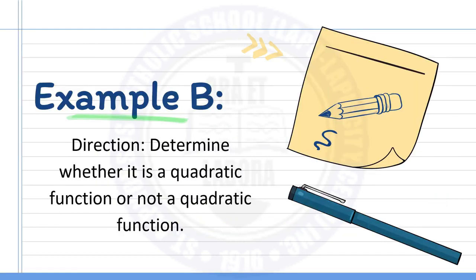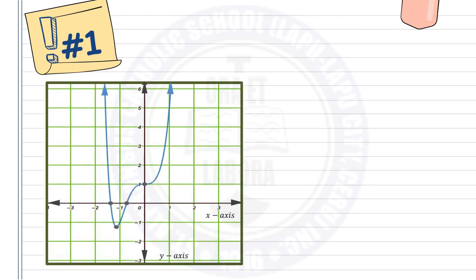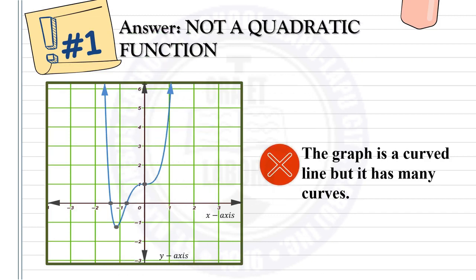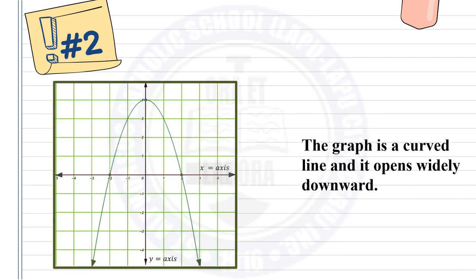Example B: Determine whether the graph represents a quadratic function or not. Example number 1: the graph shown is a curved line, but it has many curves, so the graph is not a quadratic function — this is an example of a polynomial function. Example number 2: the graph shows a curved line that opens widely downward, so the graph is considered a quadratic function.